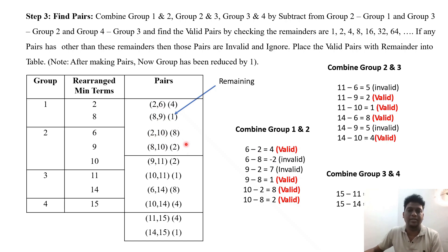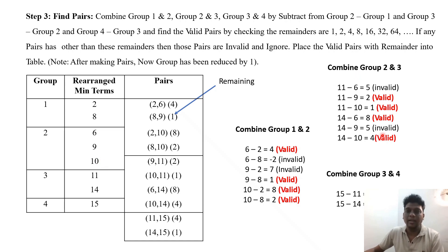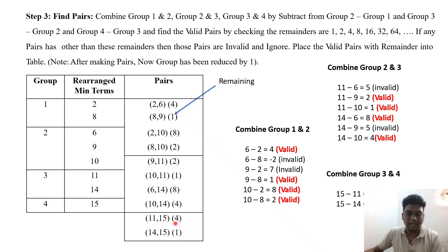Similarly, we find pairs for Group 3 minus Group 2: computing 11 minus 6, 11 minus 9, 11 minus 10, 14 minus 6, 14 minus 9, and 14 minus 10. Only the valid power-of-two remainders are kept. Then for Group 4 minus Group 3, we compute 15 minus 11 and 15 minus 14, again keeping only valid remainders. This completes finding all the pairs.